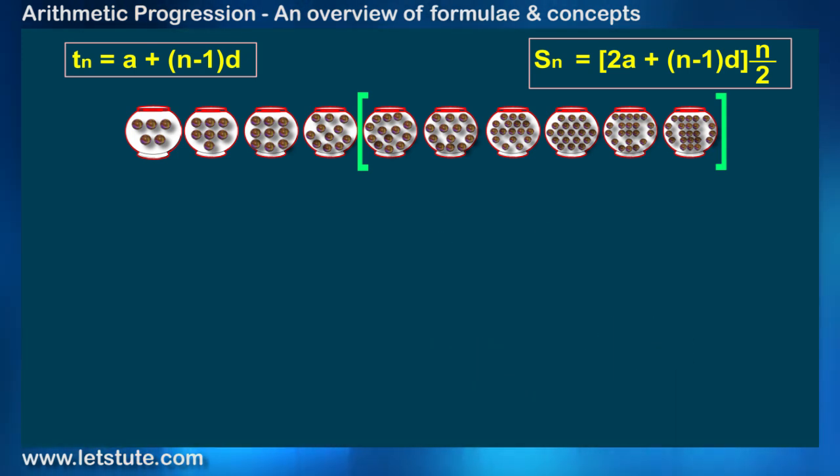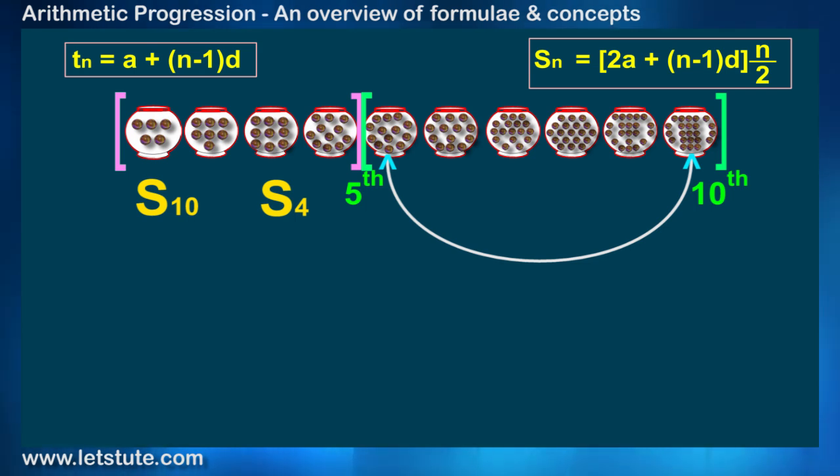Now I will tell you the solution. What I will do is, I will first calculate S10, which is the sum of marbles in all 10 pots from the first one and subtract the sum of marbles in the first 4 pots. So I will also calculate S4. Therefore, the total number of marbles from 5th to 10th pots will be calculated as S10 minus S4.